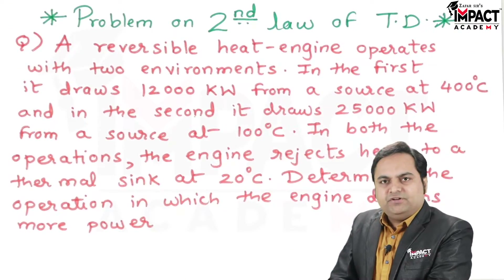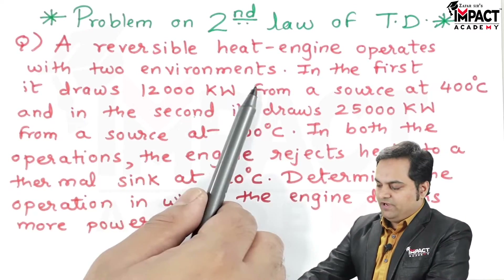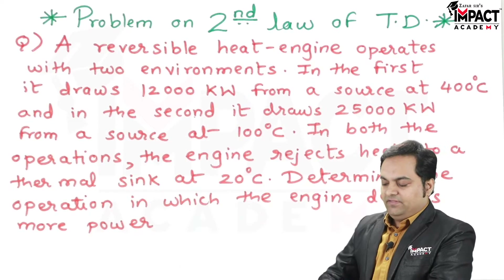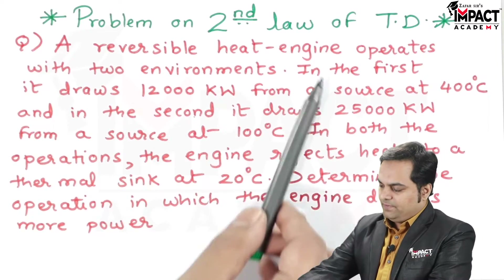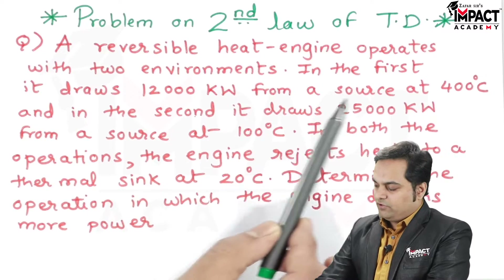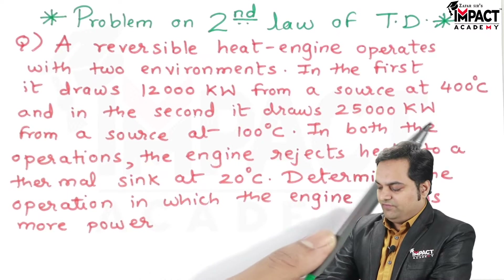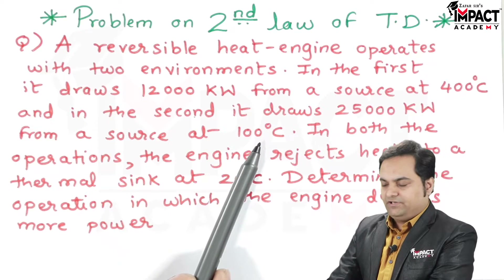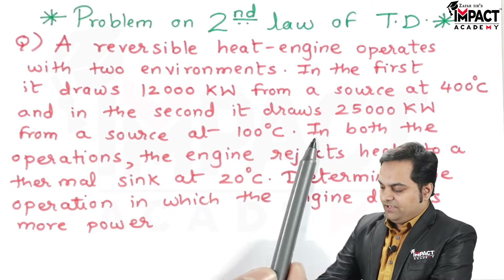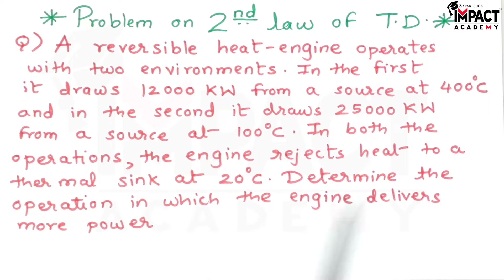Here is the question in front of us. It is given that a reversible heat engine operates with two environments. In the first condition, it draws 12,000 kilowatts from a source at 400 degree Celsius. In the second, it draws 25,000 kilowatts from a source at 100 degree Celsius. In both operations, the engine rejects heat to a thermal sink at 20 degree Celsius. We need to determine the operation in which the engine delivers more power.